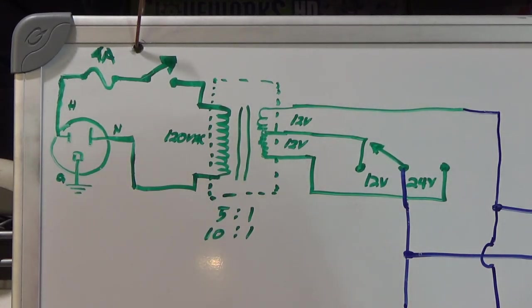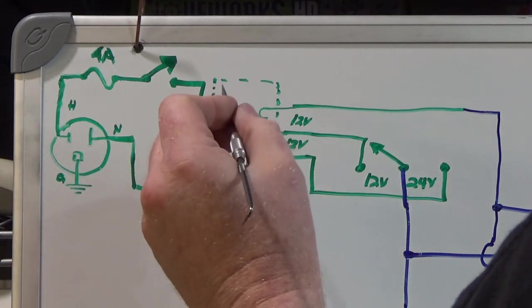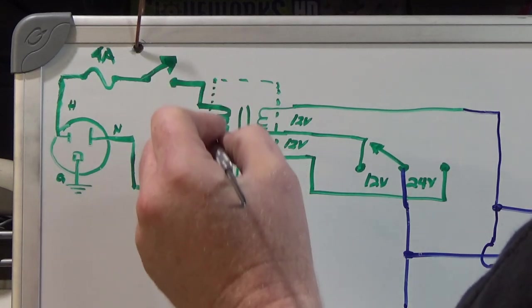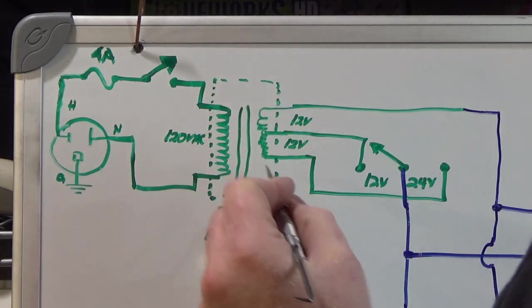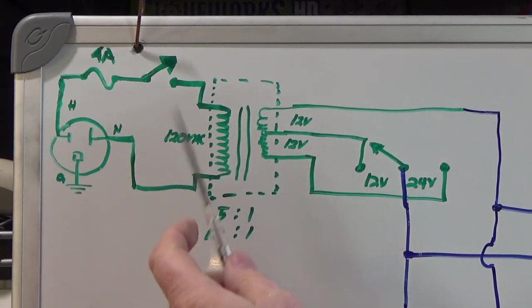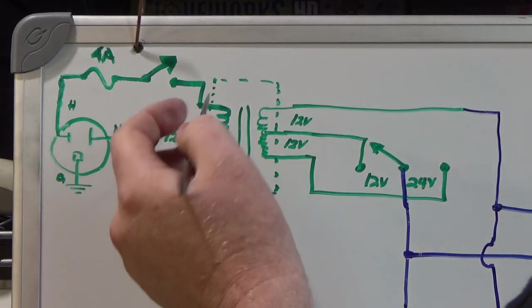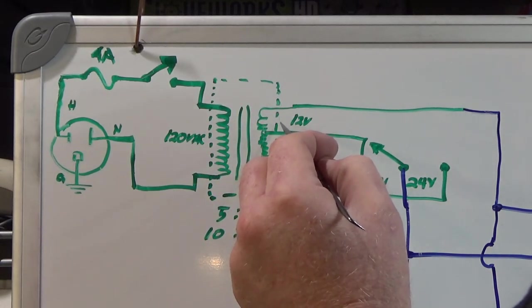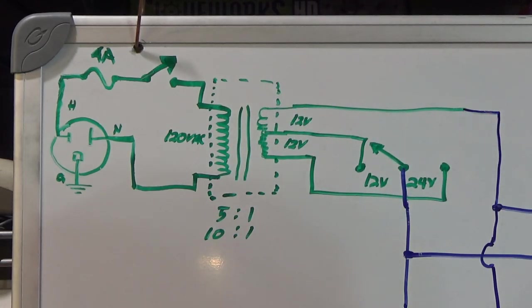On to the transformer. The transformer is a pretty simple device. A transformer basically changes the voltage on one side to a different voltage on the other side. It does so by a ratio of turns. So if I have 10 turns on this side and one turn on this side, the voltage on this side will be one-tenth the voltage on the other side. On the flip, if I have one amp on the 10 turn side, I will have 10 amps of capability on the one turn side because the inverse relationship with current is available.